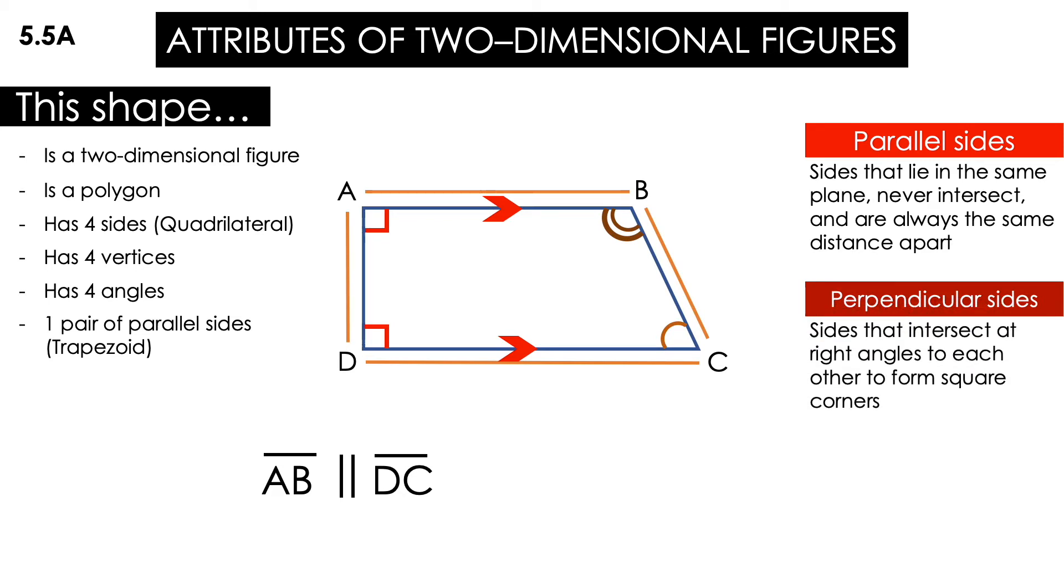Perpendicular sides are sides that intersect at right angles to form square corners. As you can tell, AD and AB, those make a right angle. That means that I have AD is perpendicular to AB. Also, if you see AD and DC, they are also perpendicular. That means that I have what? I have two pairs of perpendicular sides.